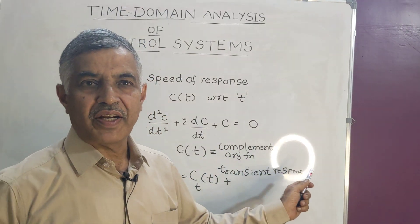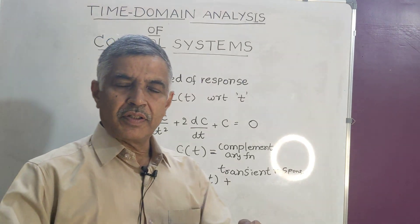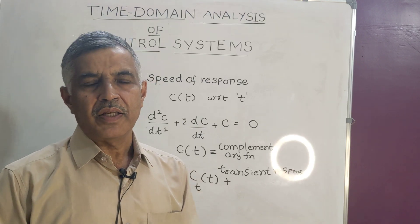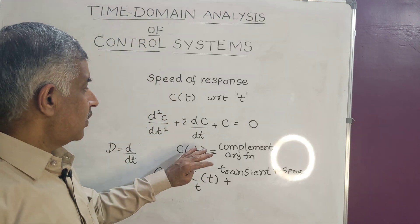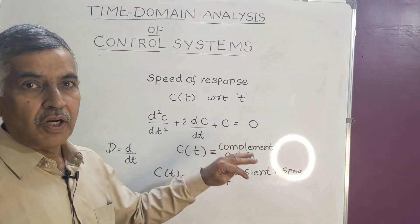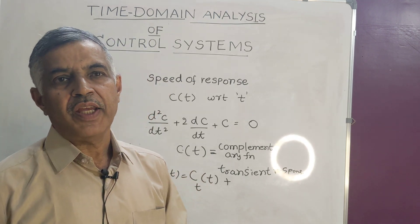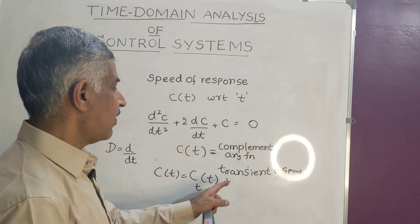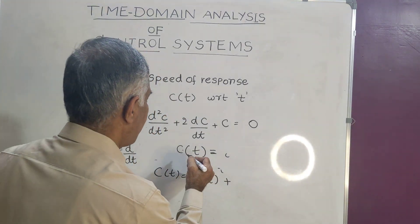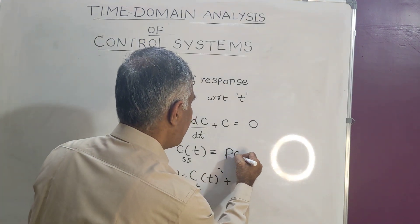Systems having energy storage elements will exhibit transient behavior — that is what is called transient response, c_t(t). Once the transient response becomes zero, the system enters into steady state. The influence of initial conditions is over, and now the type of input influences the speed of response. That is what is called the particular integral, which I will now call the steady state response, c_ss(t).